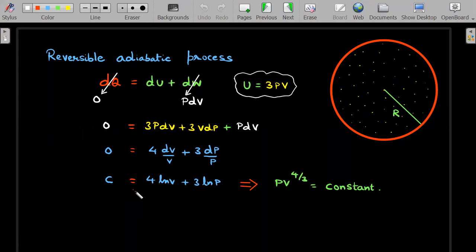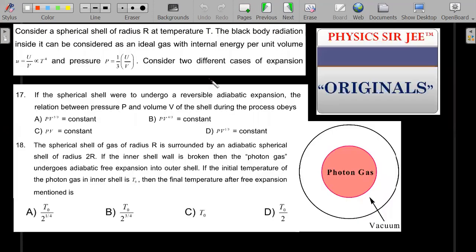So integrate and then you end up getting that this particular relation is a constant, and hence you rearrange with the normal logarithmic powers, you'll get PV^(4/3) = constant, valid for a reversible adiabatic process applied to a photon gas. The gas is made of photons. This is the basic idea of any black body cavity radiator. So the 17th question answer should be B.